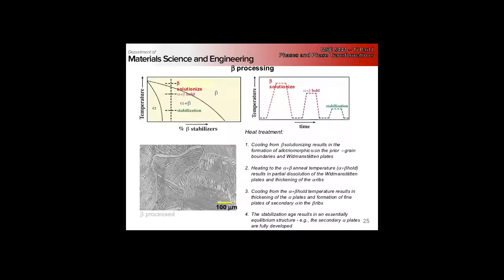We talked at the end of last class about beta processing, where we take our alloy up above the transus, completely solutionize in the beta field, then quench down. As we cool down from the solutionizing heat treatment, we nucleate alpha on the grain boundaries and get Widmanstätten laths. The mechanics and transformation of Widmanstätten is completely analogous to steel, so all the same physical metallurgy applies here as well.